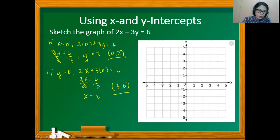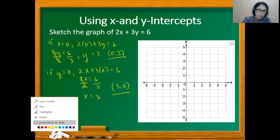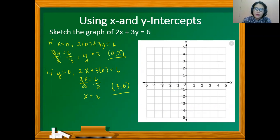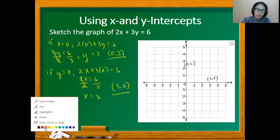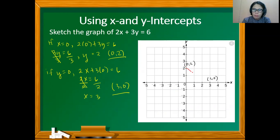So we have the points (0, 2) on the y-axis and (3, 0) on the x-axis. We connect these two points using a straight line to sketch the graph. This is, again, the graph of 2x plus 3y equals 6.